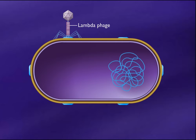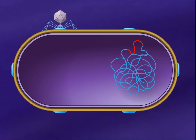When lambda phage infects E. coli, the phage DNA enters the cell and then integrates into a specific site on the host chromosome. When an E. coli culture carrying the lambda phage is induced, phage particles are produced.